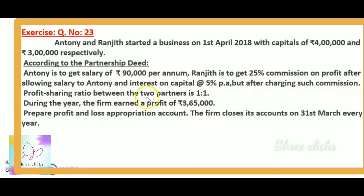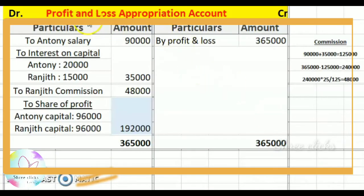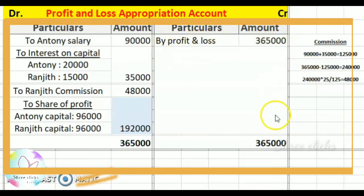This is the profit sharing ratio of the two partners. On the debit side we have a balancing figure, and the balancing figure is the profit sharing, which is 1:1. Profit and loss appropriation account — credit side: by profit and loss, 3,65,000. Total credit value is 3,65,000.